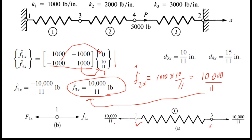The bottom figure shows spring 1 and its local forces. The node numbers are 1 and 3. Since f1x-cap is a negative value, it is directed opposite to the x-direction. Positive values are marked to the right direction; negative values are marked to the left — opposite to x. That is why this force is shown pointing to the left.